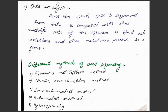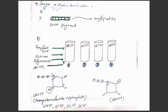Different methods are used for DNA sequencing. The first method is the Maxam and Gilbert method. The second method is the chain termination method. The third method is the semi-automated method. The fourth method is the automated method, and the fifth method is the pyrosequencing method. Here we will discuss the Sanger method, which is also called the chain termination method.